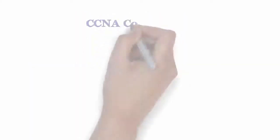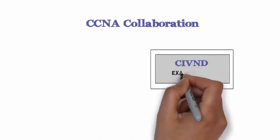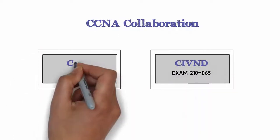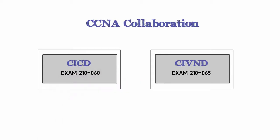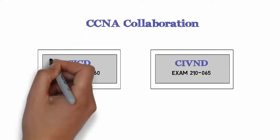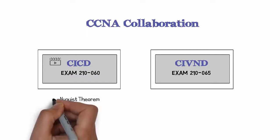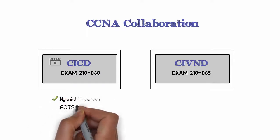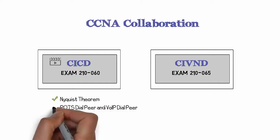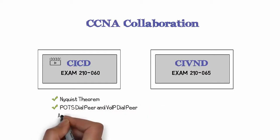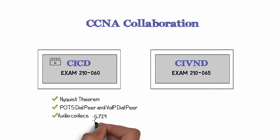The CIVND exam is one of two exams that you'll need to pass to attain the CCNA Collaboration certification. To make the most of your CCNA Collaboration journey, you should have already watched the CICD videos that are part of this series, or be familiar with the content in those courses. As an example, you should know what the Nyquist theorem is, what a POTS dial peer is versus a VoIP dial peer, and about audio codecs such as G.729 and G.711.